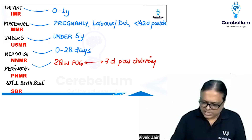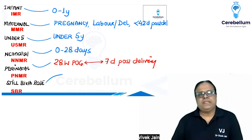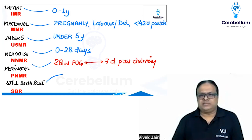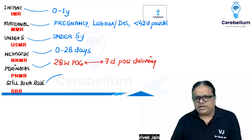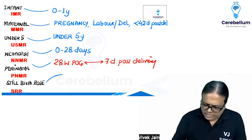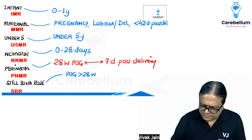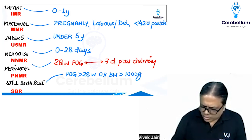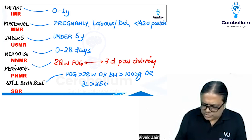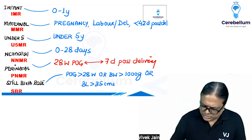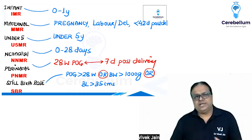What is the definition of a stillbirth? We discussed this on day one — there is no need to rewrite it. A stillbirth is when a fetus is born dead after 28 weeks period of gestation, or having a birth weight more than 1000 grams, or having a birth length more than 35 centimeters. Any one of these three qualifies as a stillbirth.